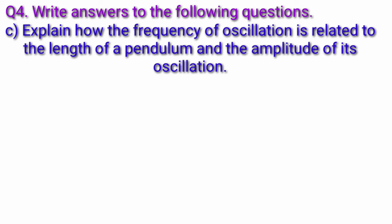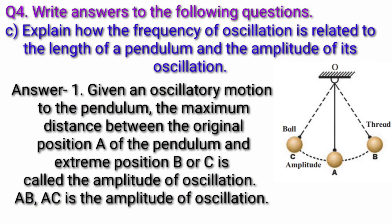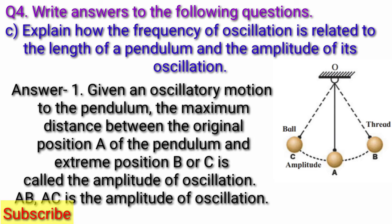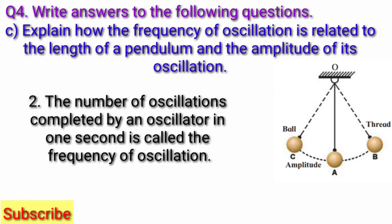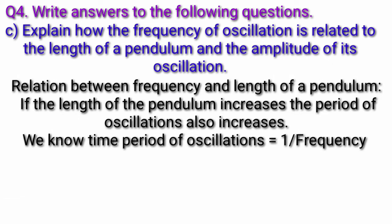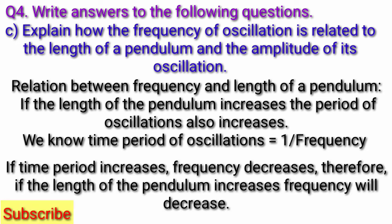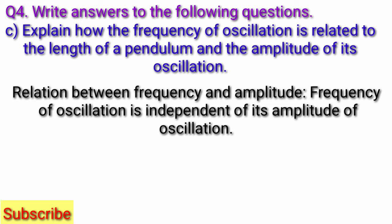Question C: Explain how the frequency of oscillation is related to the length of a pendulum and the amplitude of its oscillation. Answer: Given an oscillatory motion, the maximum distance between the original position A of the pendulum and extreme position B or C is called the amplitude of oscillation. The number of oscillations completed by an oscillator in one second is called frequency of oscillation. Relation between frequency and length: if the length of pendulum increases, the period of oscillation also increases. Since time period equals one upon frequency, if time period increases, frequency decreases. Therefore, if the length of pendulum increases, the frequency will decrease. Relation between frequency and amplitude: frequency of oscillation is independent of its amplitude of oscillation.